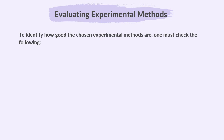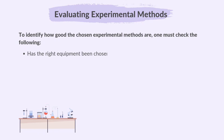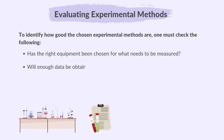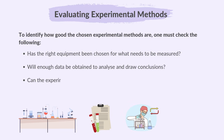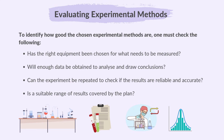To identify how good the chosen experimental methods are, one must check the following: Has the right equipment been chosen for what needs to be measured? Will enough data be obtained to analyze and draw conclusions? Can the experiment be repeated to check if the results are reliable and accurate? Is a suitable range of results covered by the plan? Each method and apparatus has its strengths and limitations, so the choice depends on the experiment's requirements for precision and practicality.